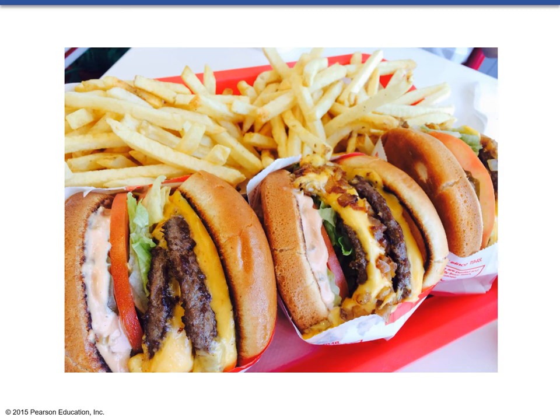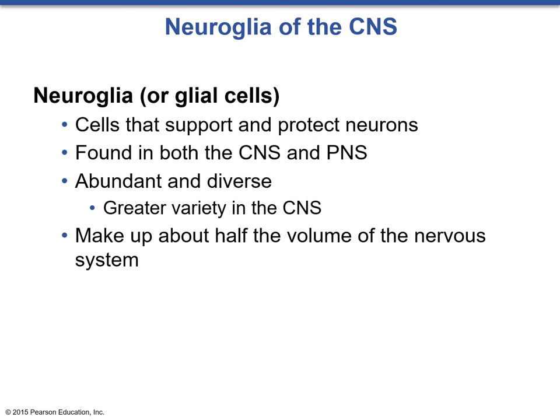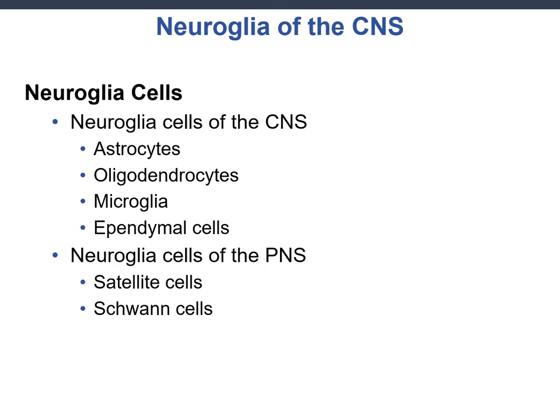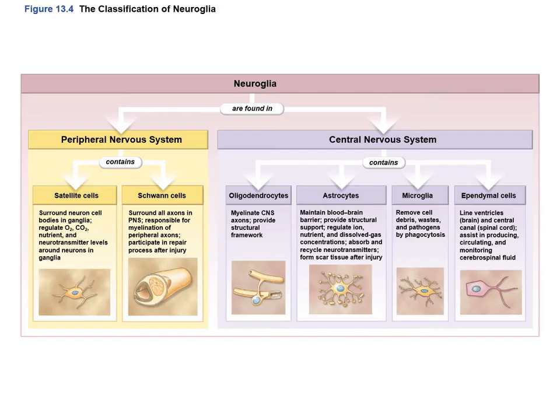Now we look at the other type of cell in the nervous system: glial cells, or neuroglia. These cells support and protect neurons. They are found in both the central and peripheral nervous systems, are abundant and diverse, and make up about half the volume of the nervous system. In the CNS, glial cells include astrocytes, oligodendrocytes, microglia, and ependymal cells. The peripheral nervous system has satellite cells and Schwann cells.